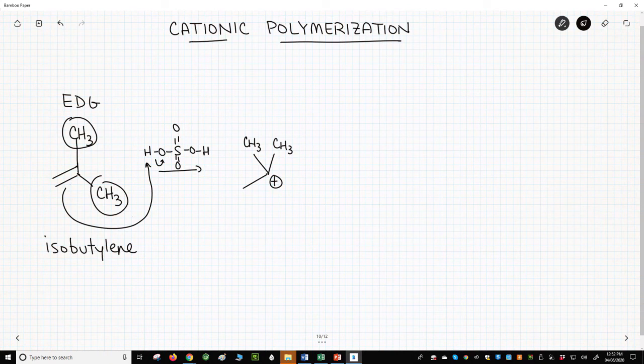The carbocation is stabilized through hyperconjugation by our two methyl groups. It is a tertiary carbocation. While tertiary carbocations are stable relative to other carbocations, it's still a carbocation and highly reactive.